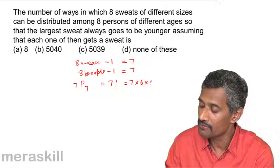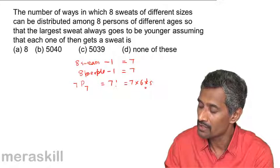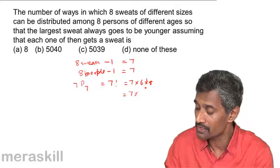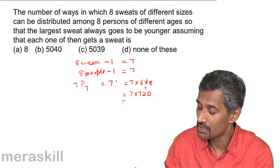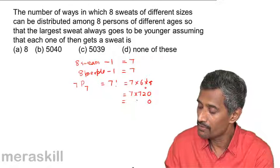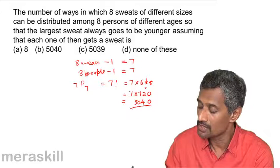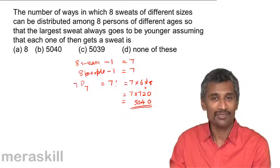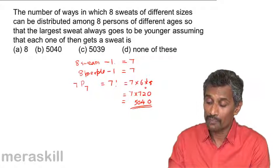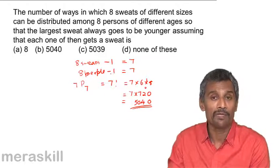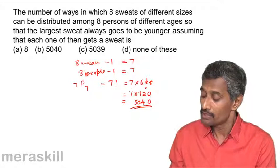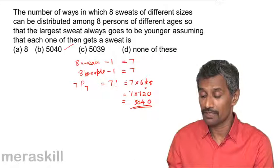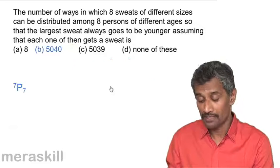Distributing 7 sweats among 7 people gives 7 factorial. That is 7 × 6 factorial, and since 6 factorial is 720, we get 7 × 720 = 5040. So the answer is 5040. In this case, one sweat is excluded from the general distribution and one person is also removed, so we effectively compute 7 factorial = 5040.